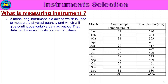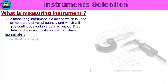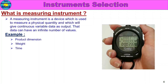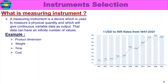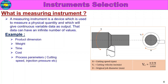Now, you can see the sample data as output. That data can have an infinite number of values — different variables. This is variable data. Examples: product dimension, weight, time, cost, process parameters such as cutting speed, injection pressure, etc. This is the example for variable data.